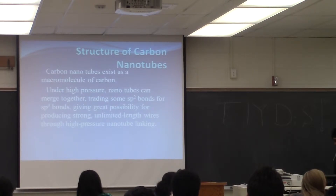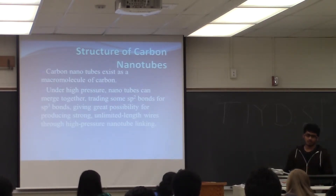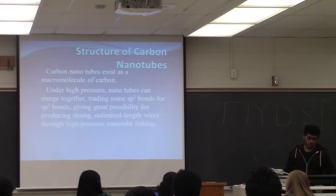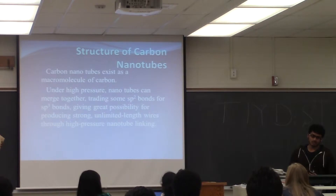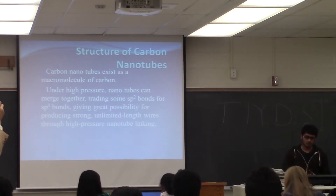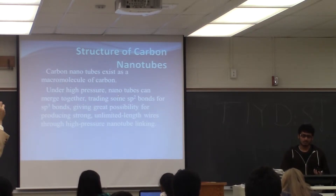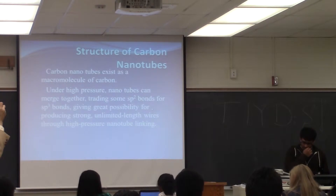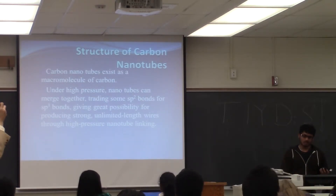Thank you. Hi, I am Tejas. I would like to continue with the structure of carbon nanotubes after the detailed introduction by Sunny. Carbon nanotubes exist as a macro molecule of carbon. At higher pressure, nanotubes can merge together by trading some SP2 bonds for SP3 bonds, giving great flexibility for producing strong, unlimited-length wires through high-pressure nanotube linking.